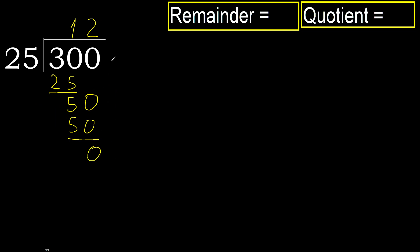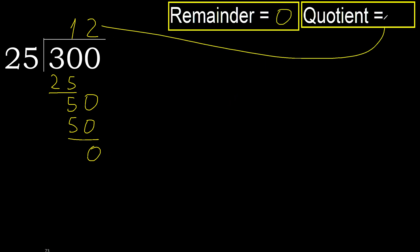Next — there is no more number, therefore finish it. Therefore, 300 divided by 25 is 12.